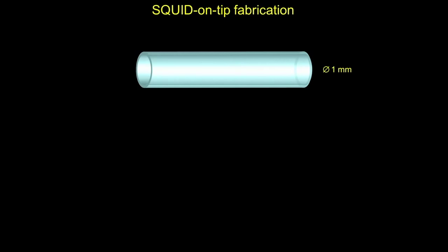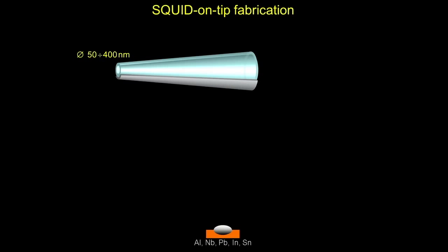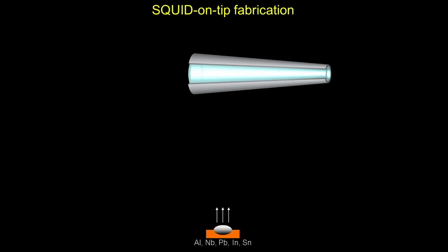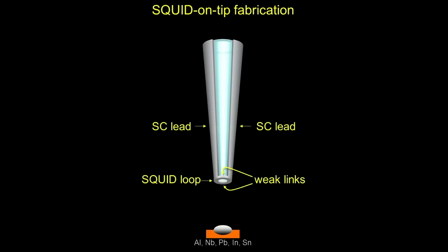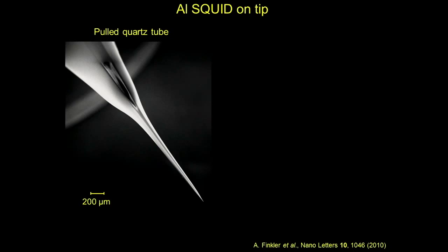We take a quartz tube of one millimeter diameter and pull it to a very sharp pipette — this is what biologists do to inject stuff into cells. Usually they want apertures on the order of a micron or so, but it turns out you can pull them to extremely small dimensions, to tens of nanometers. Then you take your favorite superconductor and deposit on one side of this pipette, flip it to the other side and do another deposition, and then in a third deposition coat the ring at the apex of the pipette. As a result, you have two superconducting leads connected to a superconducting ring. The regions where the leads overlap the ring have stronger superconductivity; the gaps between them are your weak links, and you have a SQUID sitting on the apex of your device.